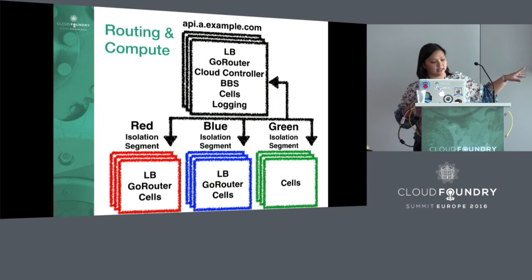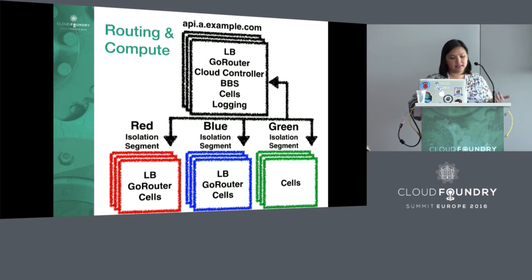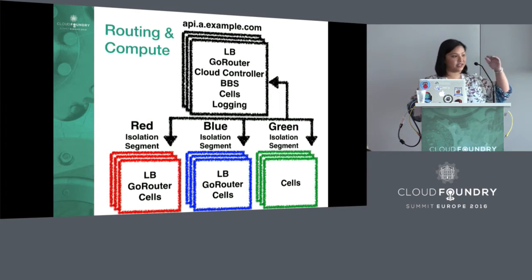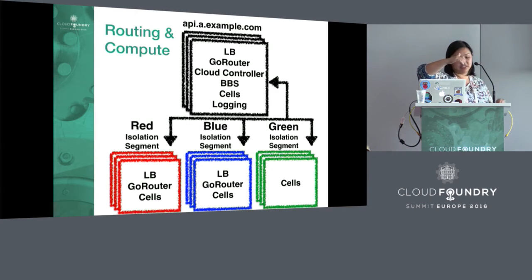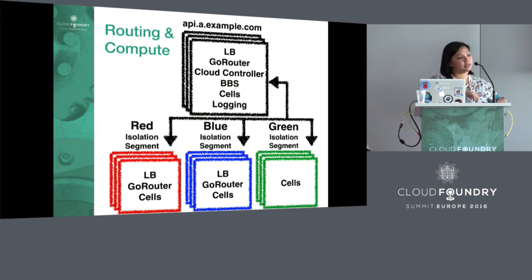The next type of isolation segment I'd like to talk about is routers and cells. From what I've heard, this is perhaps the most compelling use case for a fair amount of customers and most likely to help reduce overhead. With this, you can isolate application traffic for a particular set of apps in a segment. You'd need to configure DNS and your edge load balancer to direct routes to the correct set of Go routers, and the Go routers for that segment would be configured to only forward traffic for routes within that segment — so from the edge load balancer through the Go router and onto the cells, the entire application request is contained within the segment.